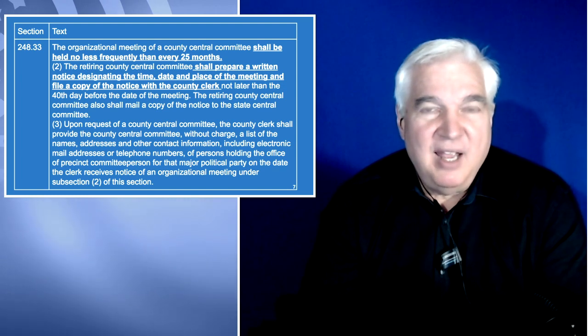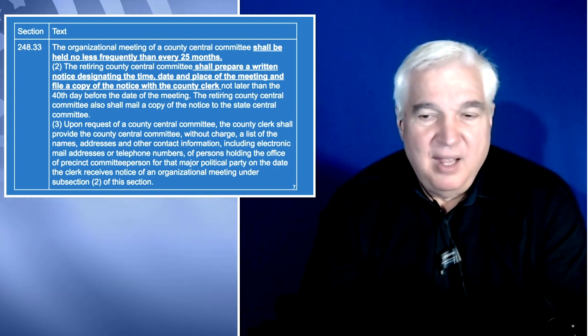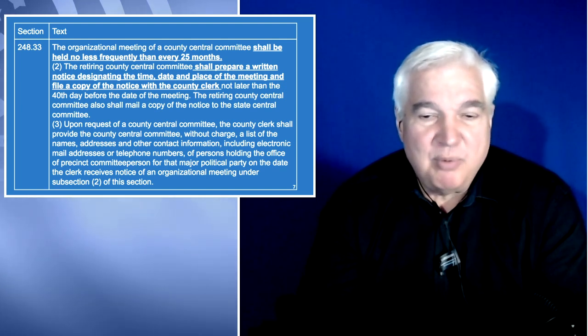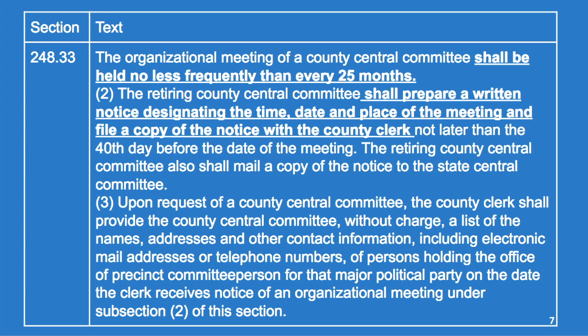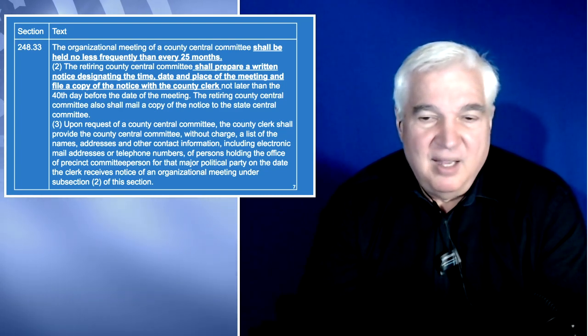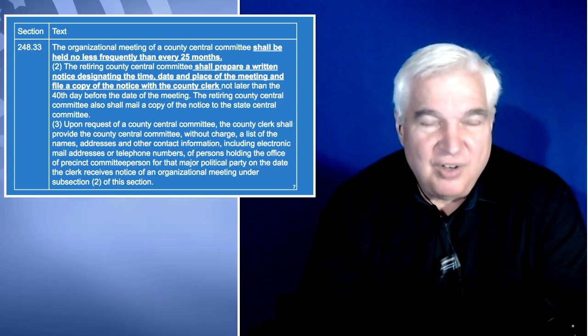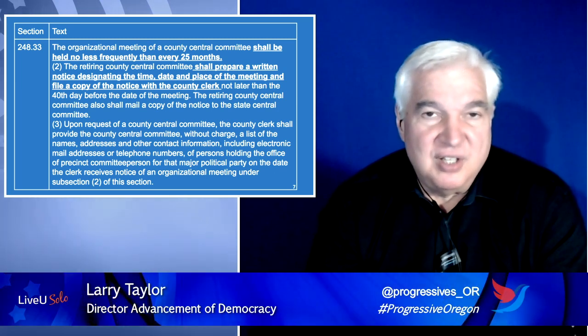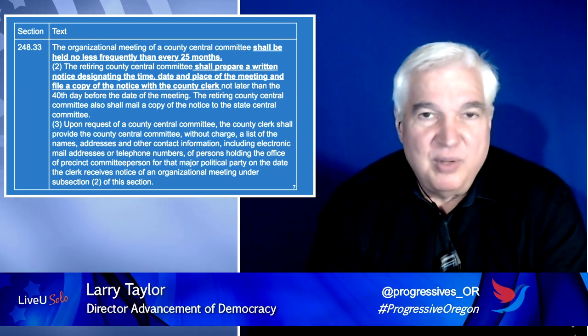The only requirement is it has to be within 25 months. The retiring county central committee shall prepare a written notice designating the time, date, and place of the meeting and file a copy with the county clerk no later than the 40th day before the date of the meeting. It is the responsibility of the retiring central committee to notify the county clerk of your election. You also have to send a notice to the state central committee so they know when organizations are happening.